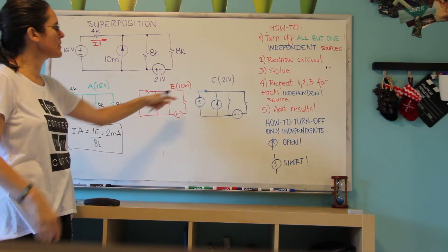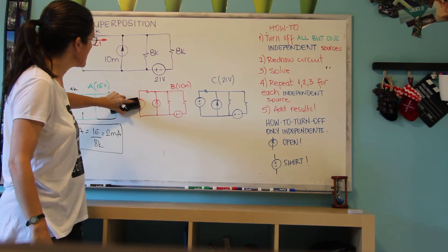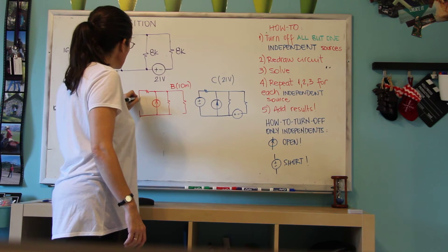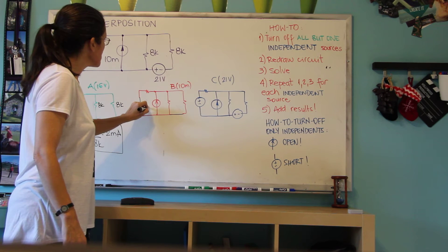We're going to do the same thing for IB and IC. Here I'm going to just leave the 10 milli. So I'm going to short these two voltage supplies here, this and this. And now this is 10 milli.